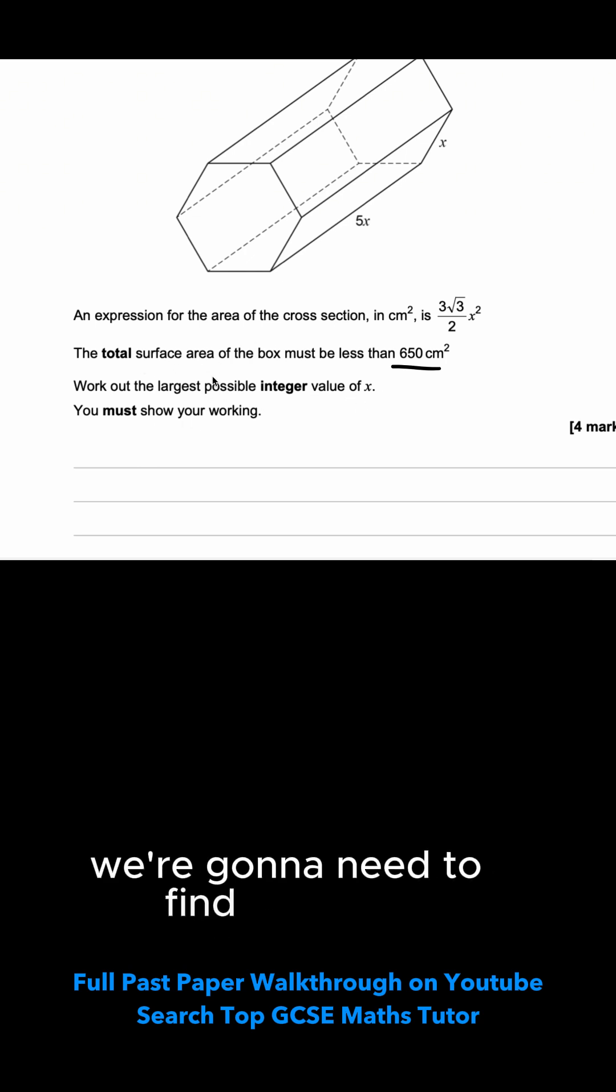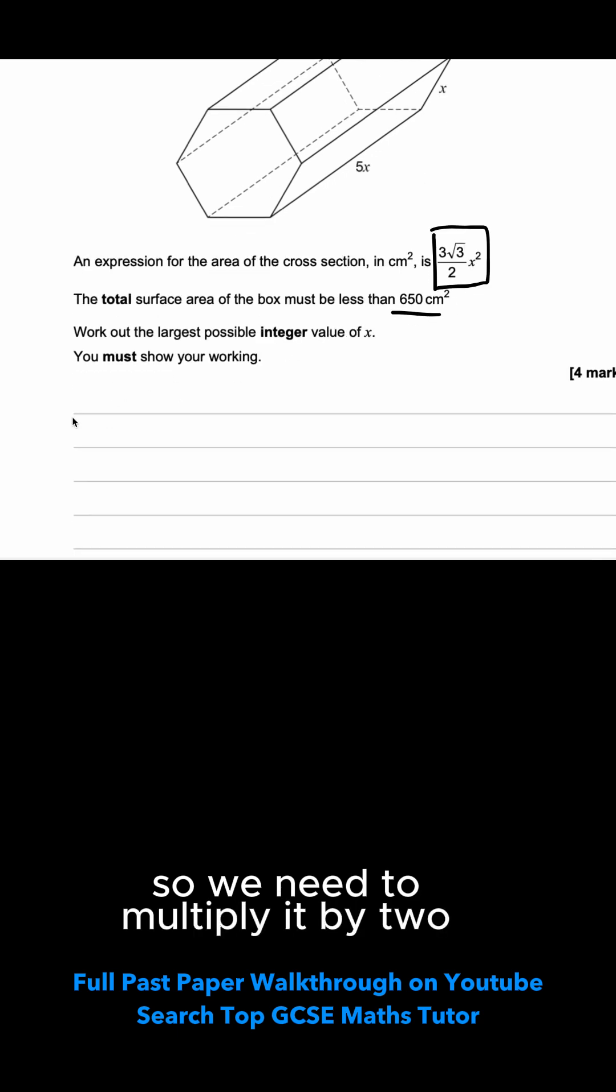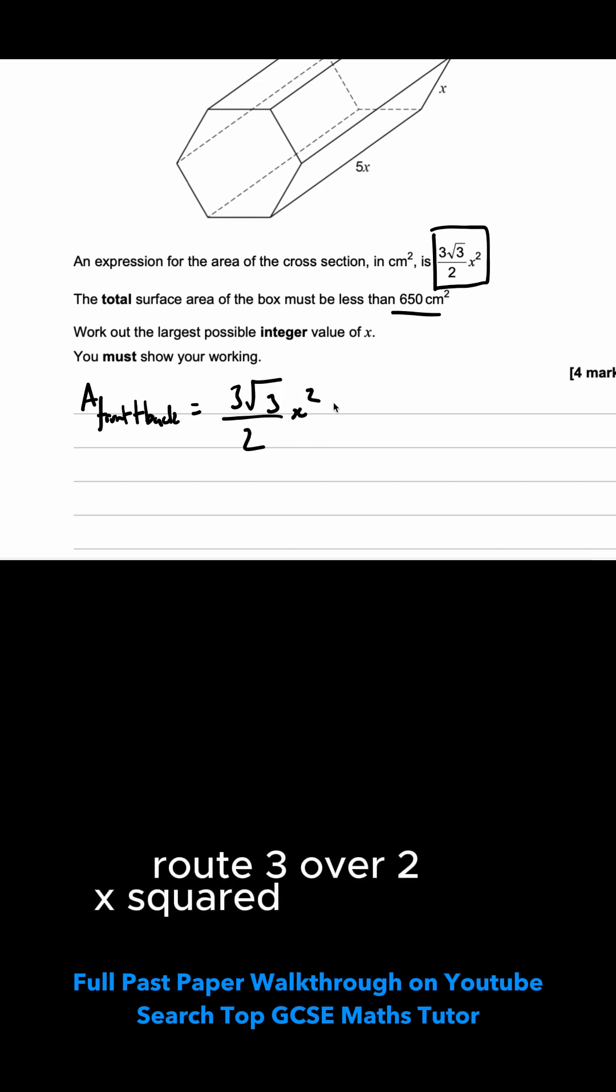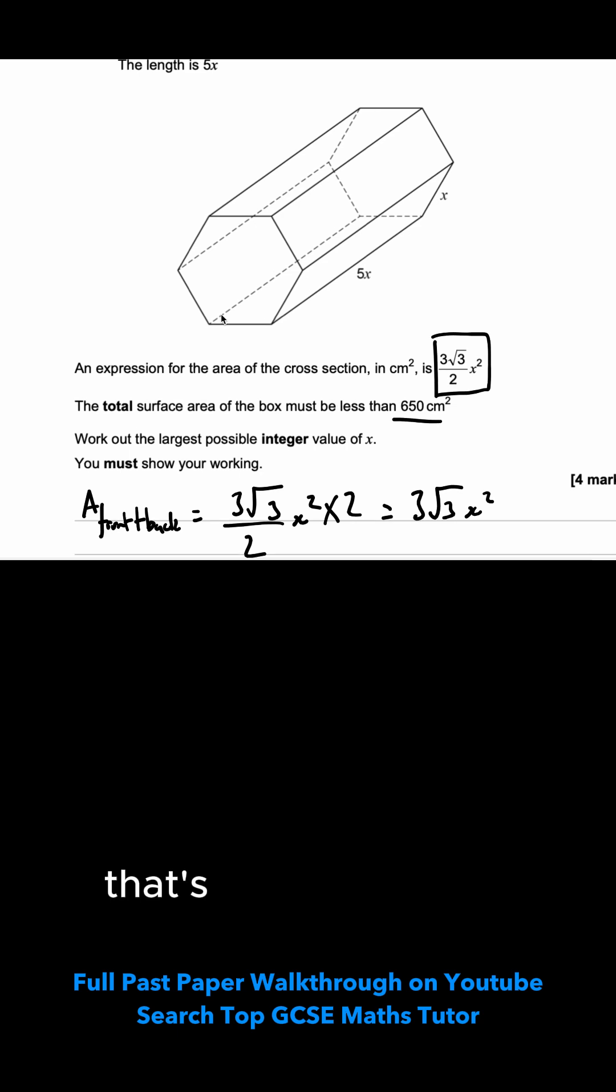For this question, we're going to need to find the total surface area. We already know what the area of the cross-section is. It's this area, which we have on the front and on the back. So we need to multiply it by 2. So the area of the front and the back is going to equal 3 root 3 over 2x squared multiplied by 2. So that's just going to remove that over 2. It'll become 3 root 3x squared. That's the front and the back done.